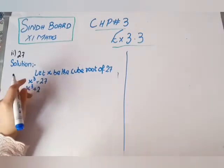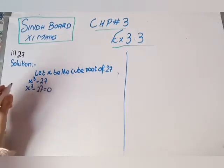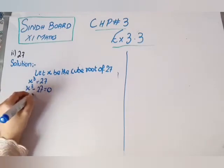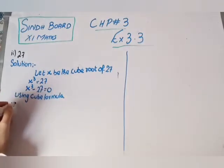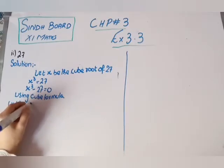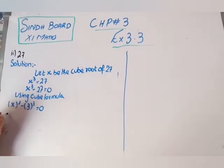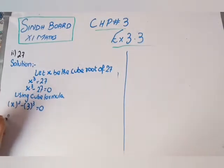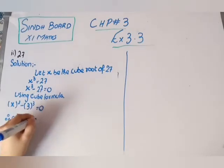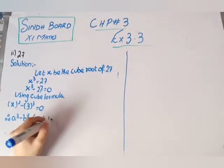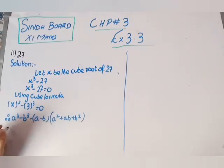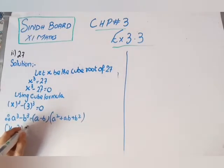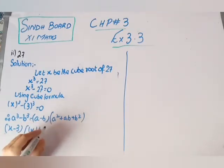Here we have x cube equals to 27, then x cube minus 27 equals to zero. Now we apply the formula: x cube minus b cube equals to (a minus b)(a squared plus ab plus b squared). So x cube minus 27 gives us (x minus 3)(x squared plus 3x plus 9).